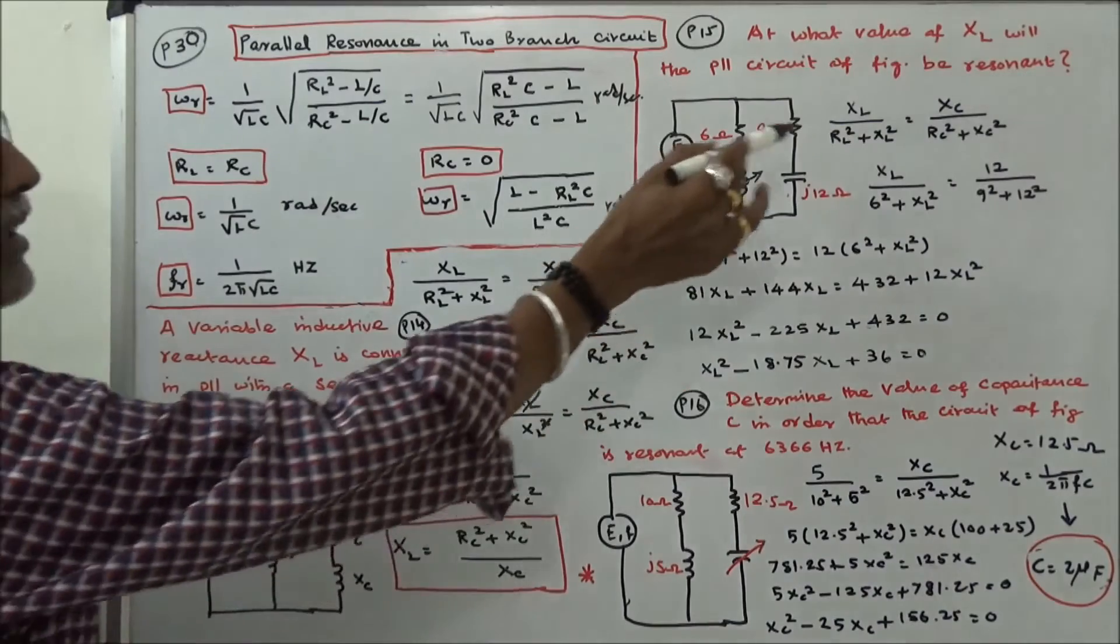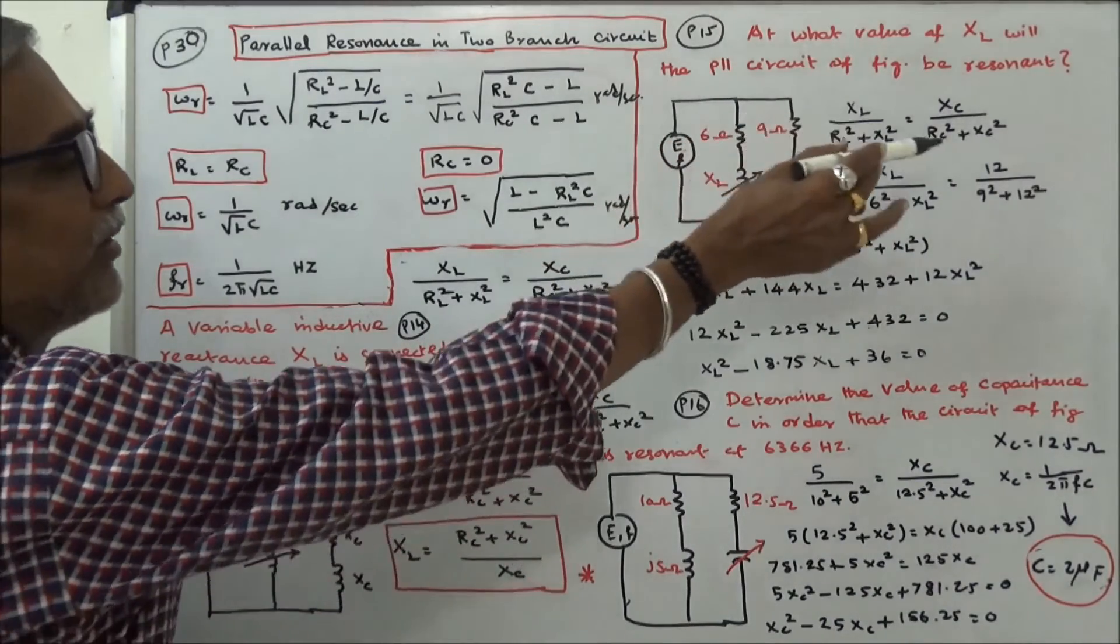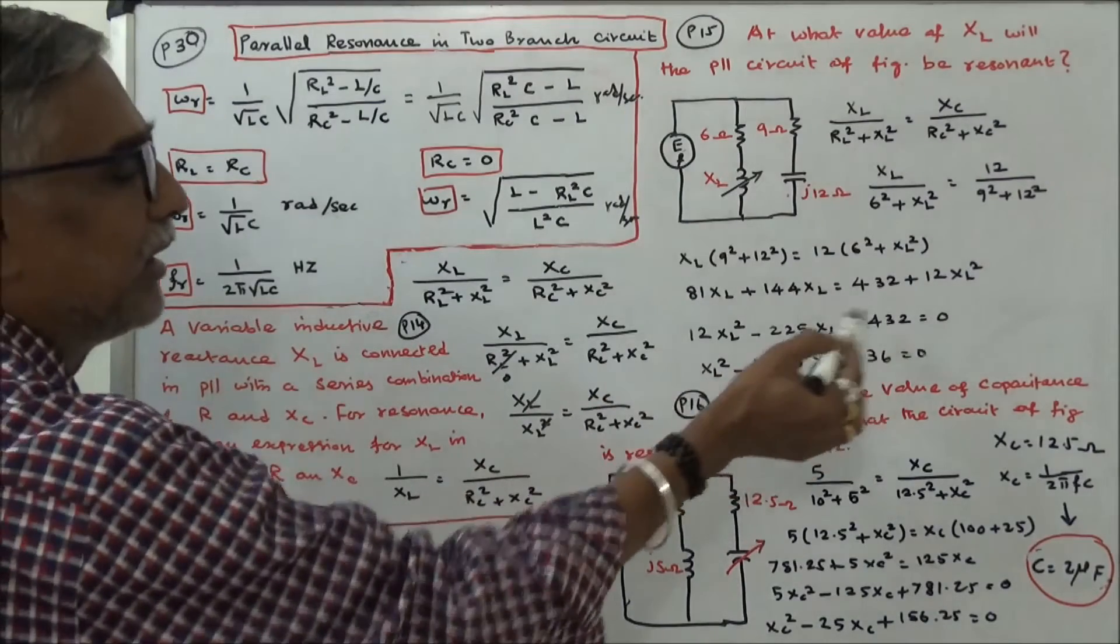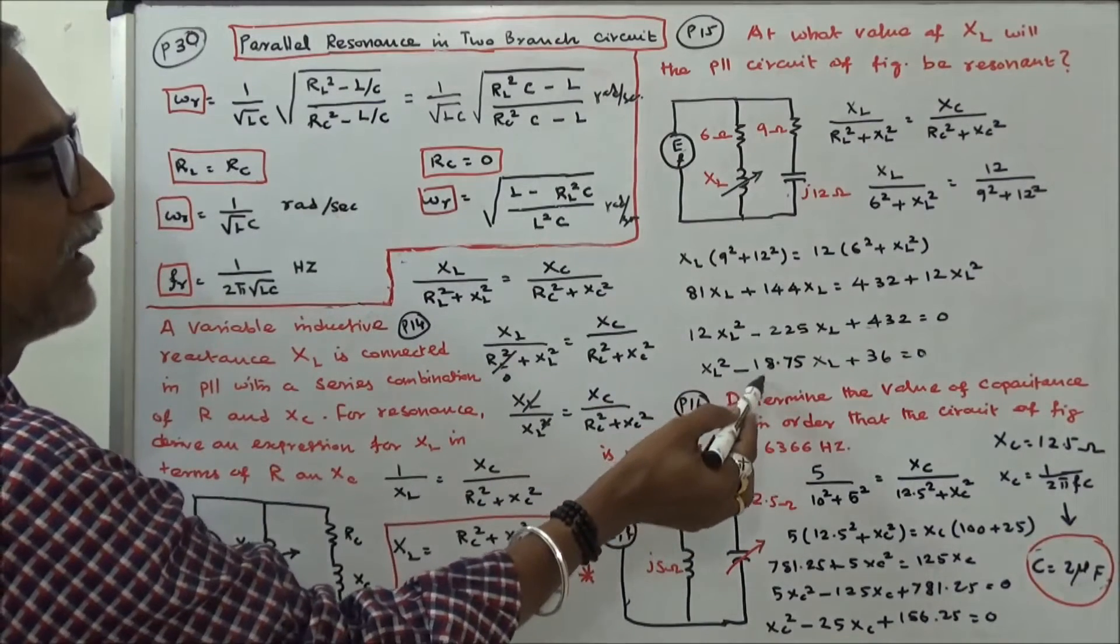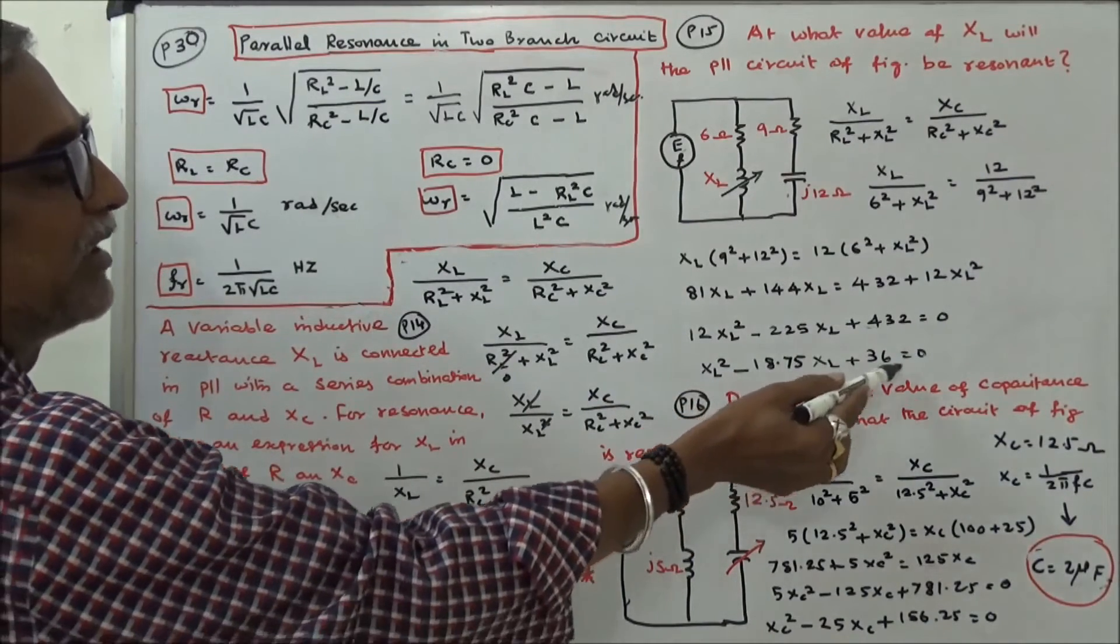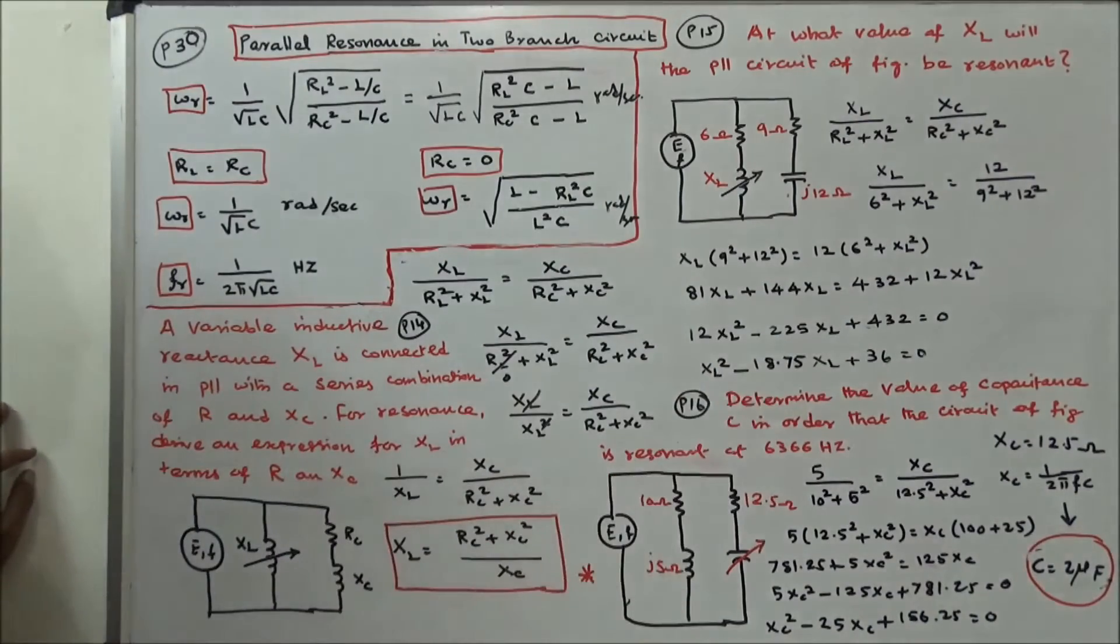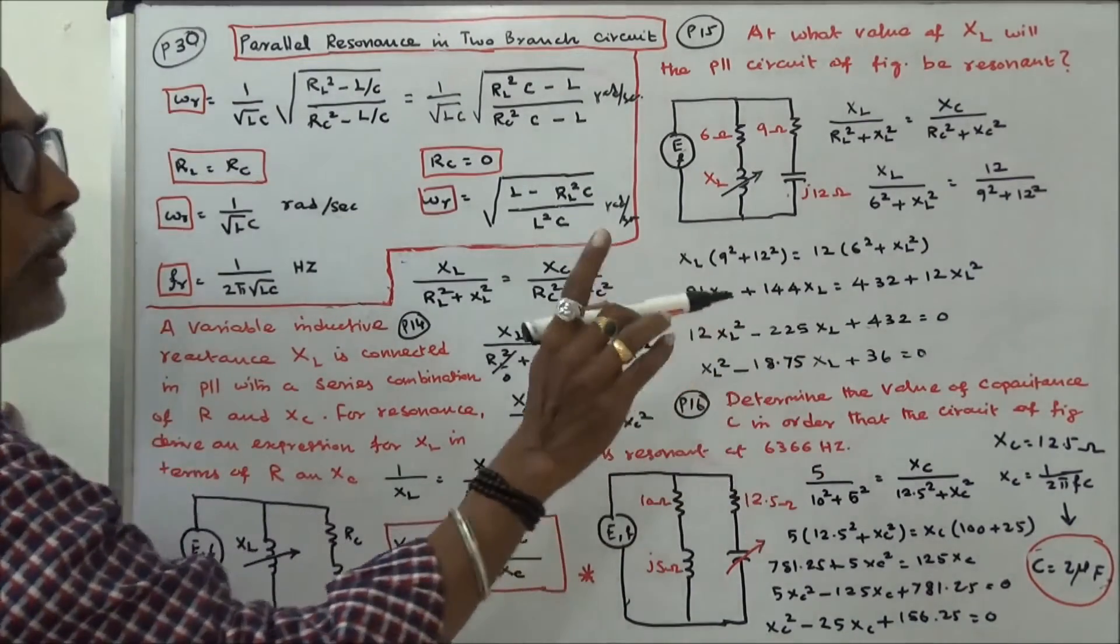You know the condition. Substitute all the values in this equation. You've got a quadratic equation: Xl squared minus 18.75 into Xl plus 36 is equal to zero. Solve this quadratic equation. You've got two values of L.